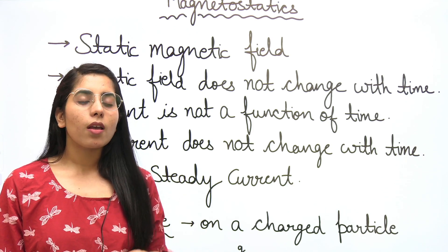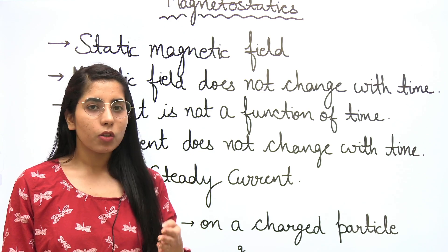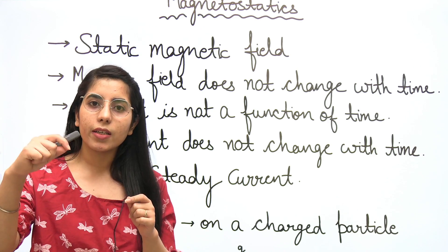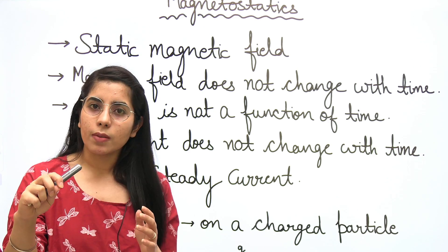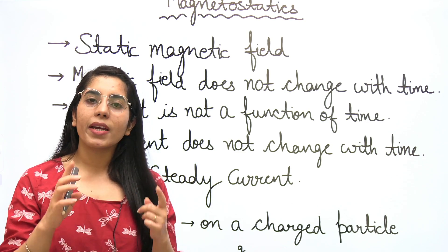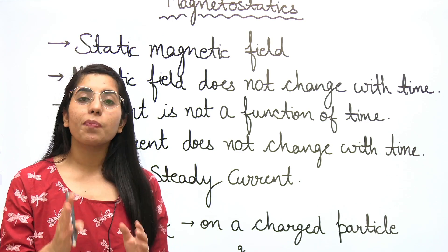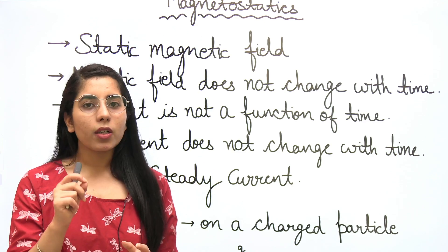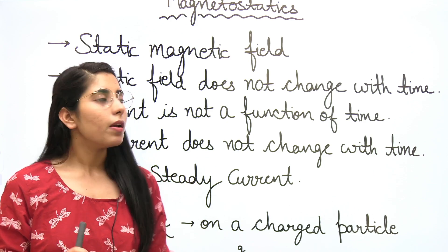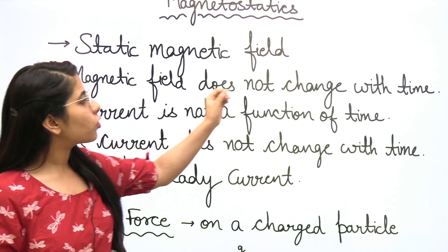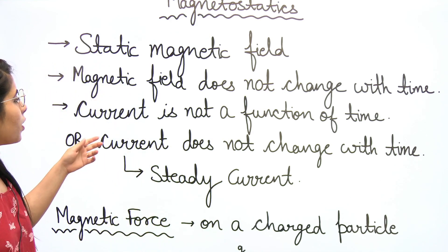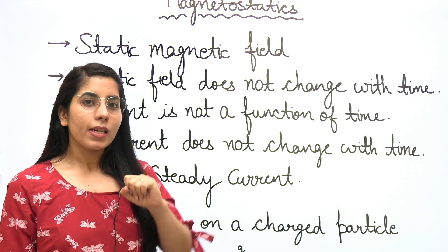Now, how can we have a magnetic field due to the presence of current? If there is current in a wire, that means charges are in motion. Corresponding to that current, you will also have a magnetic field present along that wire. So current plays a very important role here. When we say the magnetic field does not change with time, that means the current is also not changing with time — current is not a function of time.